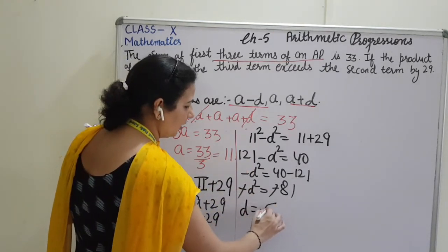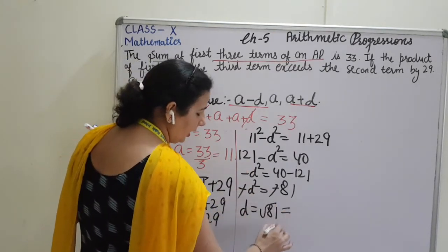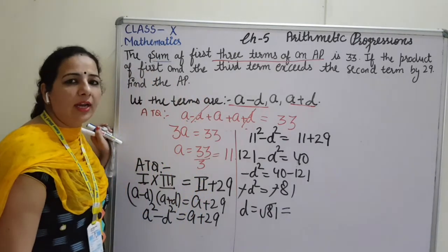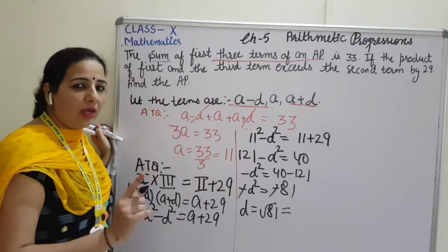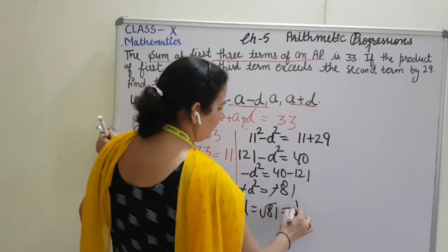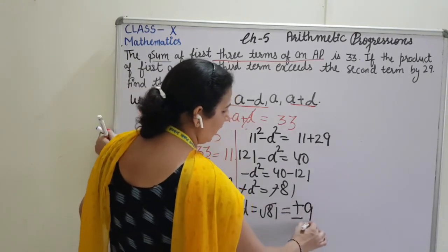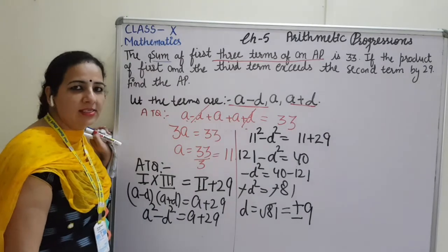I am just solving a quadratic equation here. D is equals to under root 81. And under root 81 will be not 9, it will be plus minus 9. So, here we are getting two values of D, that is plus minus 9.